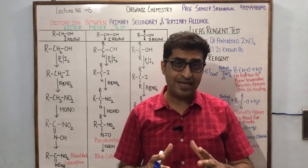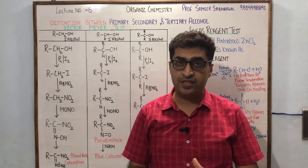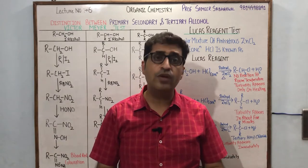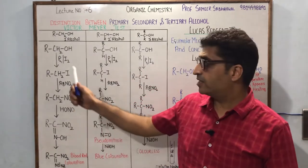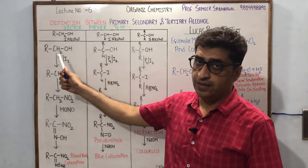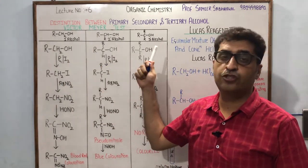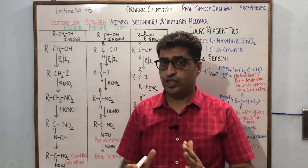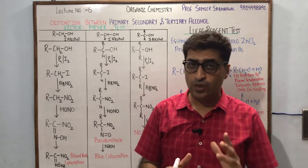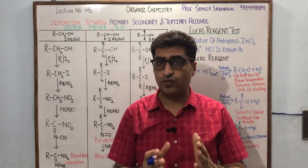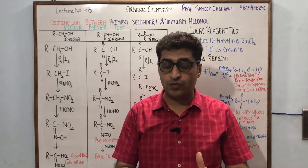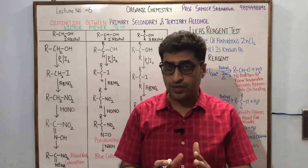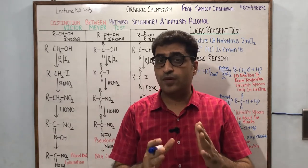The first test with the help of which we can do this distinction is Victor Meyer's test. This chart shows primary alcohol, secondary alcohol, and tertiary alcohols. The CH2OH functional group is OH. We treat it with phosphorus iodine.